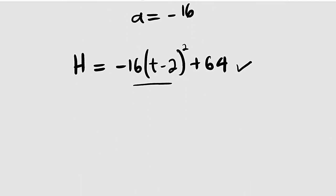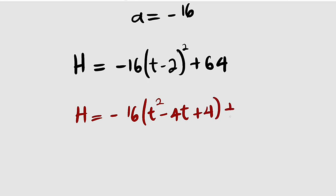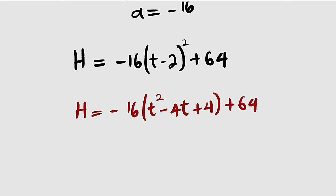h is now equal to negative 16. If you expand this, first term squared, which is t squared, minus 2 times the first term times the second term will give us 4t negative. Then negative 2 squared will give us 4, then plus 64. Let us expand the parentheses.